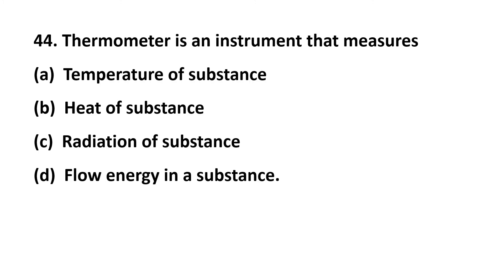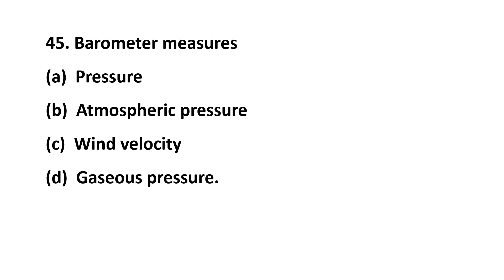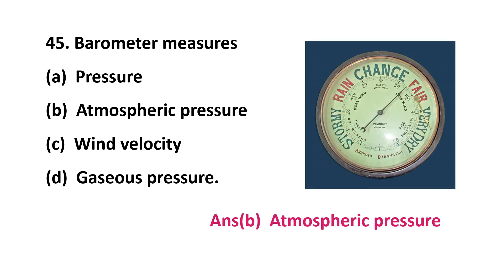Question 44: a thermometer is an instrument that measures — temperature of a substance, heat of a substance, radiation of a substance, or flow of energy in a substance? A thermometer is used to measure the temperature of a substance. Question 45: a barometer measures — option A: pressure, option B: atmospheric pressure, option C: wind velocity, option D: gaseous pressure? A barometer helps to measure atmospheric pressure, so the answer is option B.